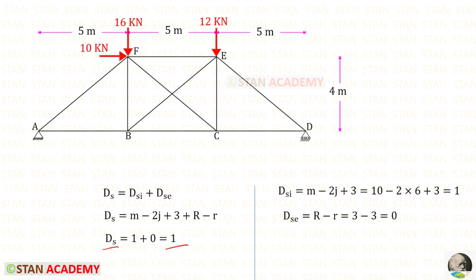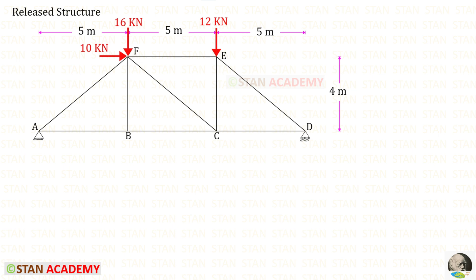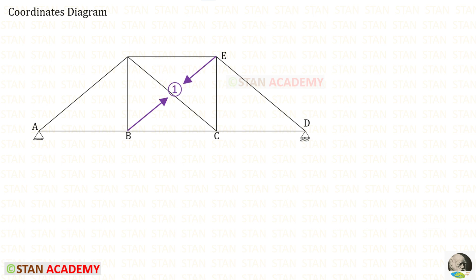That is only internal static indeterminacy. Out of these 10 members, we need to remove one member. Finding the forces in these two members will be very difficult, so for our own convenience, out of these two we can remove any one. I am going to release BE. This structure is called the released structure. In this analysis, there is only one coordinate, that is FBE, because we have released that. Let us keep the force in BE as tensile. If we get a negative value later, we can change the direction.